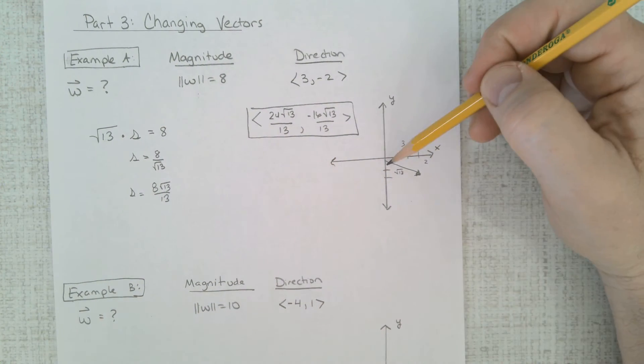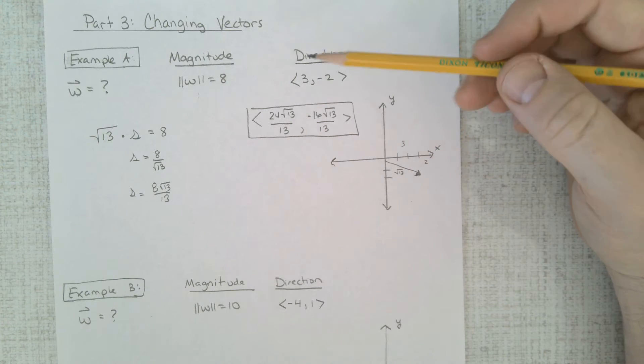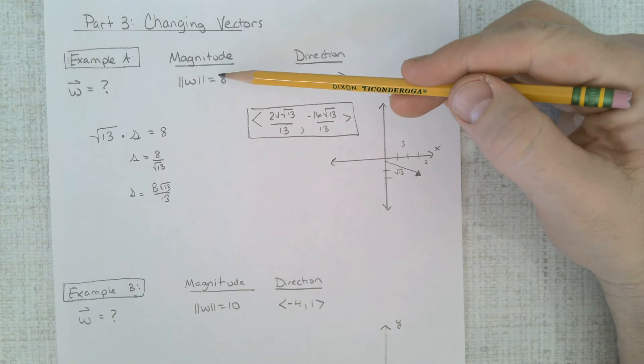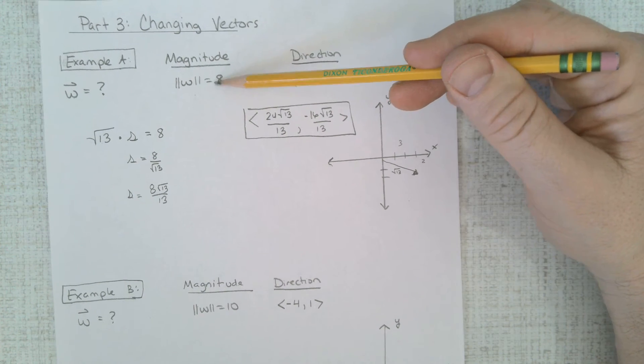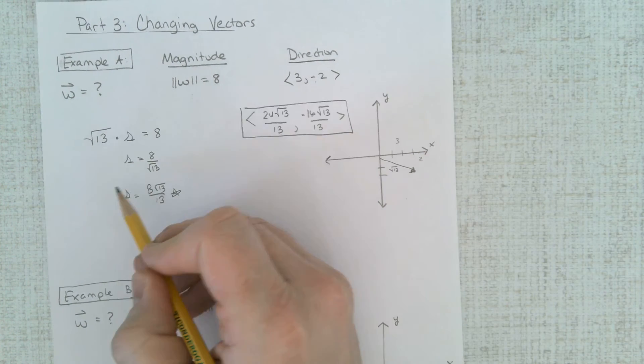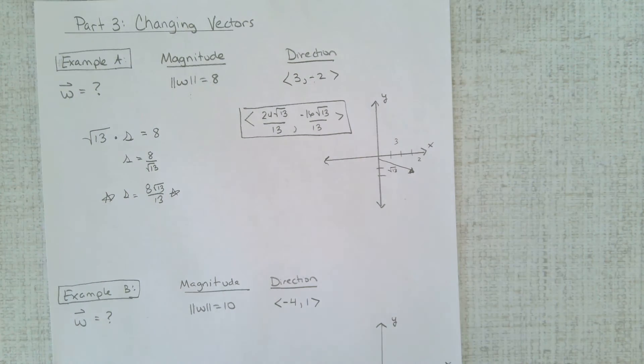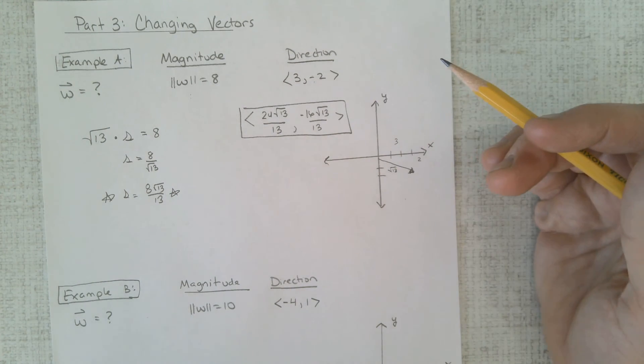This vector is going in the same direction, all I've done is I made it larger to get to 8. Same direction, larger to get to 8, and the key is you have to figure out what this scalar is. What do you have to multiply by to make it longer?